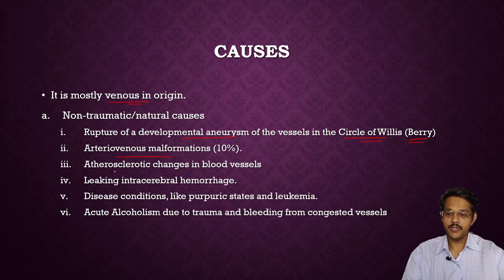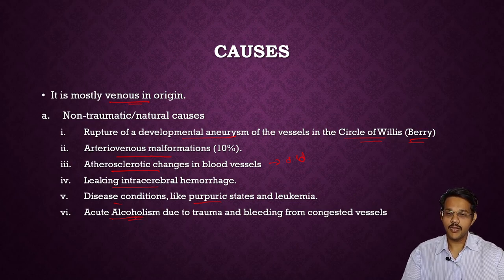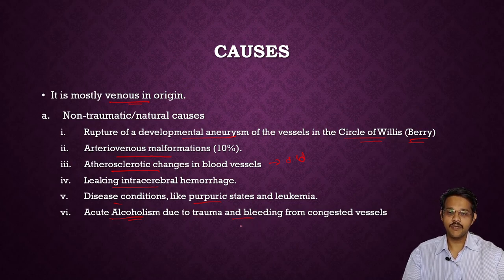Other causes include leaking intracerebral hemorrhage, conditions like purpuric states or leukemia, and acute alcoholism — where loss of motor coordination may cause hyperextension/hyperflexion injuries, and alcohol-induced vasodilation leads to easier bleeding, resulting in subarachnoid hemorrhage.